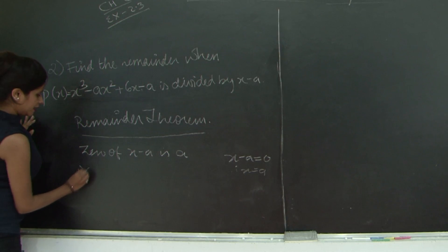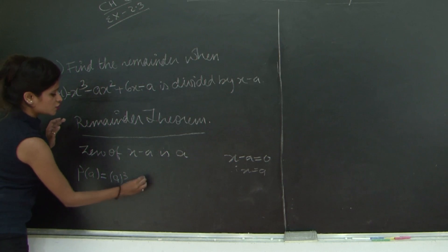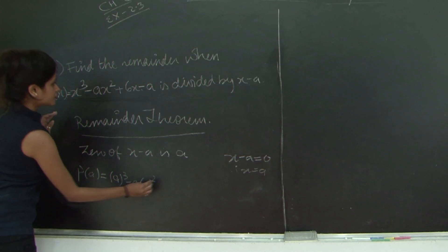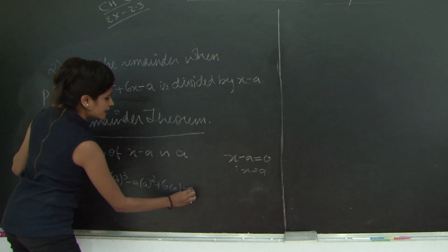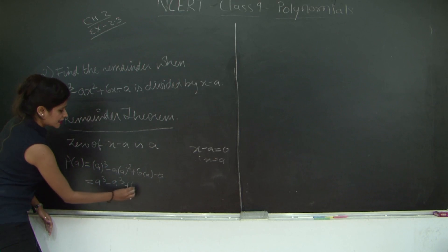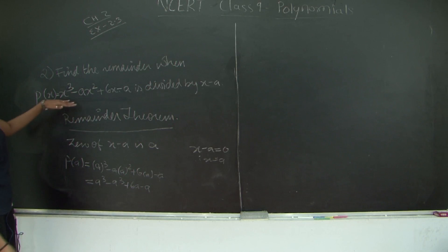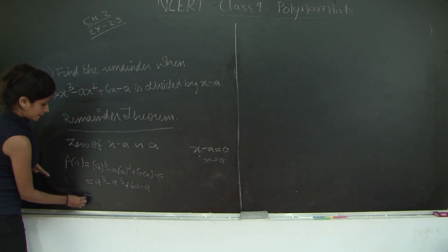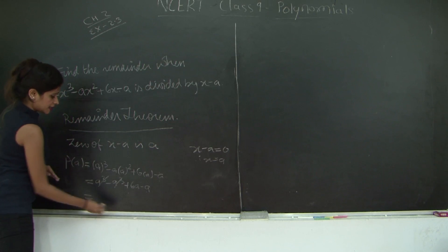So I get p(a) is equal to a³ minus a into a² plus 6a minus a. Right? So this becomes a³ minus a³ plus 6a minus a gives me 5a.